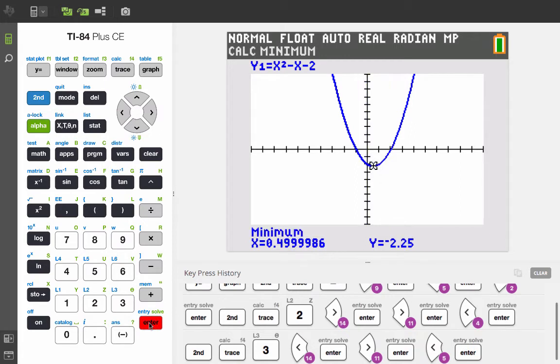And then we see that the minimum is at .499, but it looks like it's really one half, that's .5, comma, negative two and a quarter.